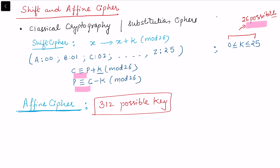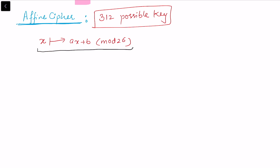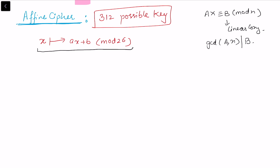In the affine cipher, we use a linear congruence of the form ax ≡ B mod n. This linear congruence is solvable if and only if the gcd of a and n divides b. Since our alphabet has 26 letters, we need to choose a such that gcd(a, 26) = 1. The valid choices for a are: 1, 3, 5, 7, 9, 11, 15, 17, 19, 21, 23, and 25.